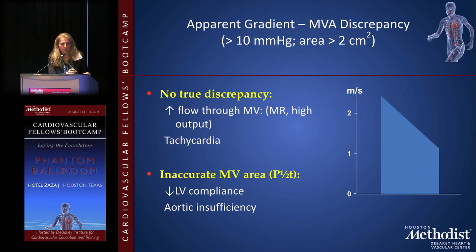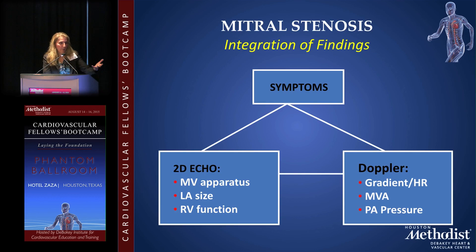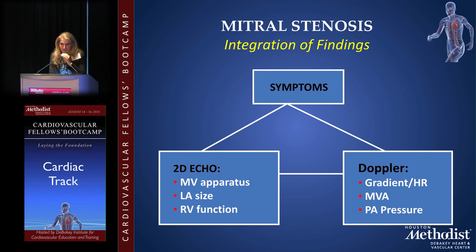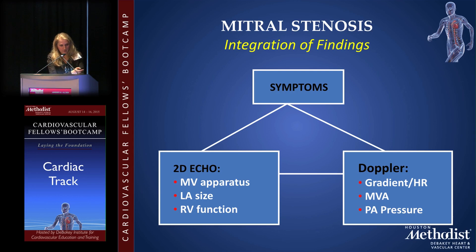Sometimes there are discrepancies between the measured degree of mitral stenosis and the patient's symptoms, particularly in patients who are very small or very large. In a very large patient, mild or moderate mitral stenosis by measurement may actually be hemodynamically severe for that patient. In such cases, we send the patient for a bicycle stress echocardiogram to assess how the mean gradient, pulmonary artery pressures, and RV respond to exercise. If the mean gradient triples and PA pressure exceeds 50, that suggests significant mitral stenosis for that patient.